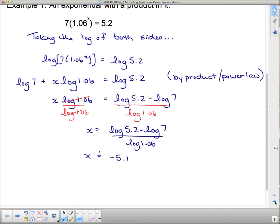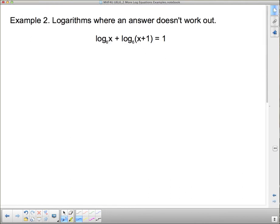The next example. Here's logarithms where an answer doesn't quite work out, which means that we're going to get an inadmissible answer according to the context of the question. So what are we going to do in this case? This just says the answer doesn't quite work out, so that's only going to affect our very last step in the whole thing.